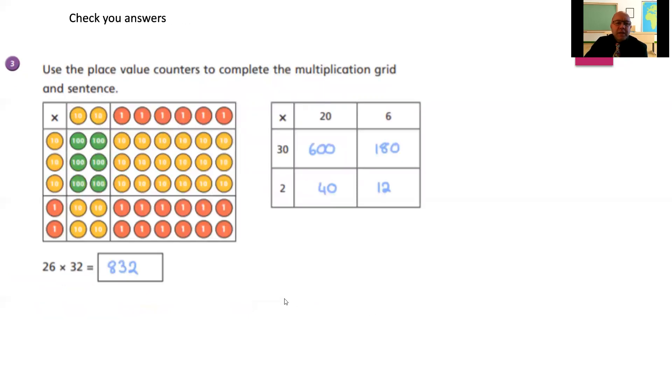So there's the answer for question three. We've got six hundreds. We have got 18 tens. So that's 180. We've got four tens, which is 40. And we have got 12 ones, which is 12. All together, that's 832. Give yourself a tick if you've got parts of that correct. Well done.